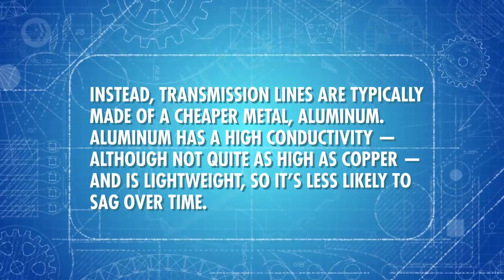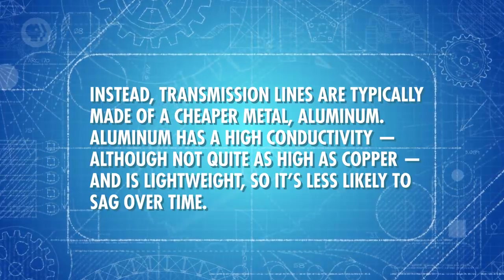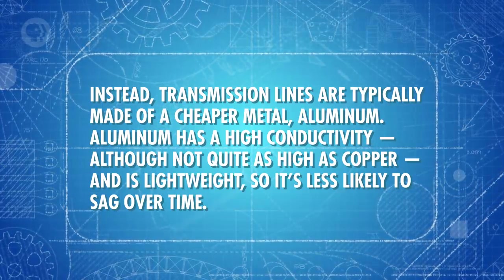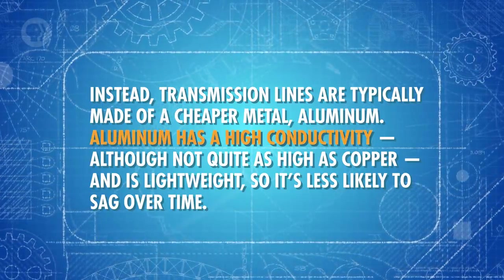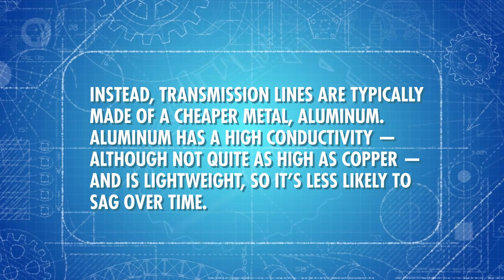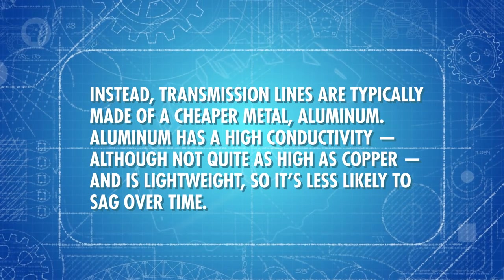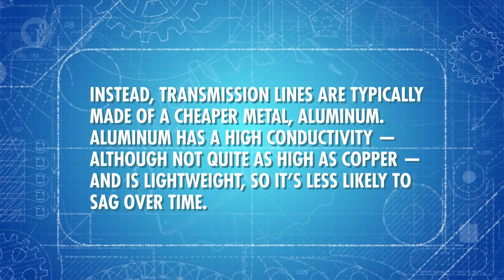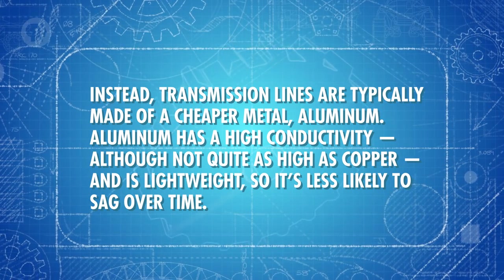Cost is one of those pesky engineering considerations that's hard to get around. Instead, transmission lines are typically made of a cheaper metal – aluminum. Aluminum has high conductivity, although not quite as high as copper. And it's lightweight, so it's less likely to sag over time. But despite this, it's not strong enough to support the tension power cables are put under for extended periods.